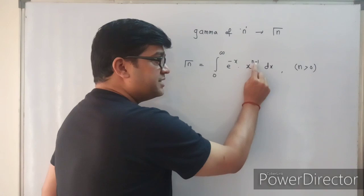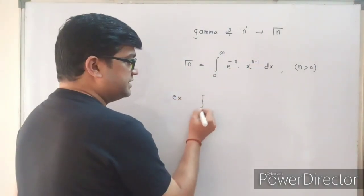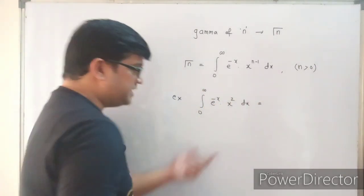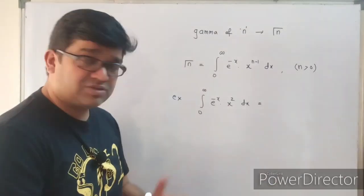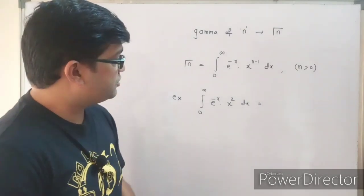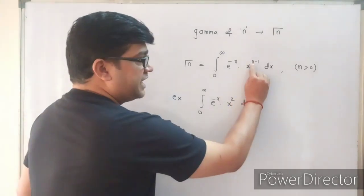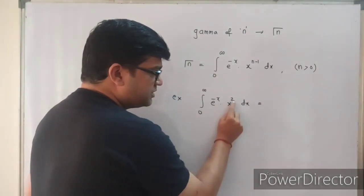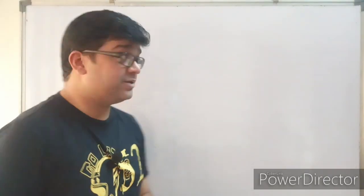For example, the integral from 0 to infinity of e raised to minus x into x squared dx is an improper integral that cannot be evaluated by normal methods. Using the gamma function definition, since the power is n minus 1 and here the power is 2, the value of this integral is Γ(3).